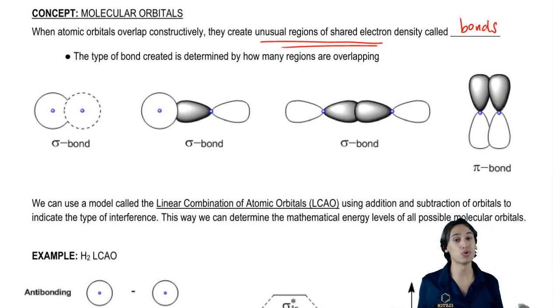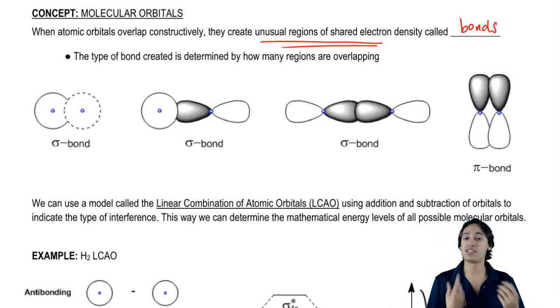It turns out that there are multiple ways to make these bonds or shared regions of electron density. Let's talk about the simplest way first, which is the sigma bond.